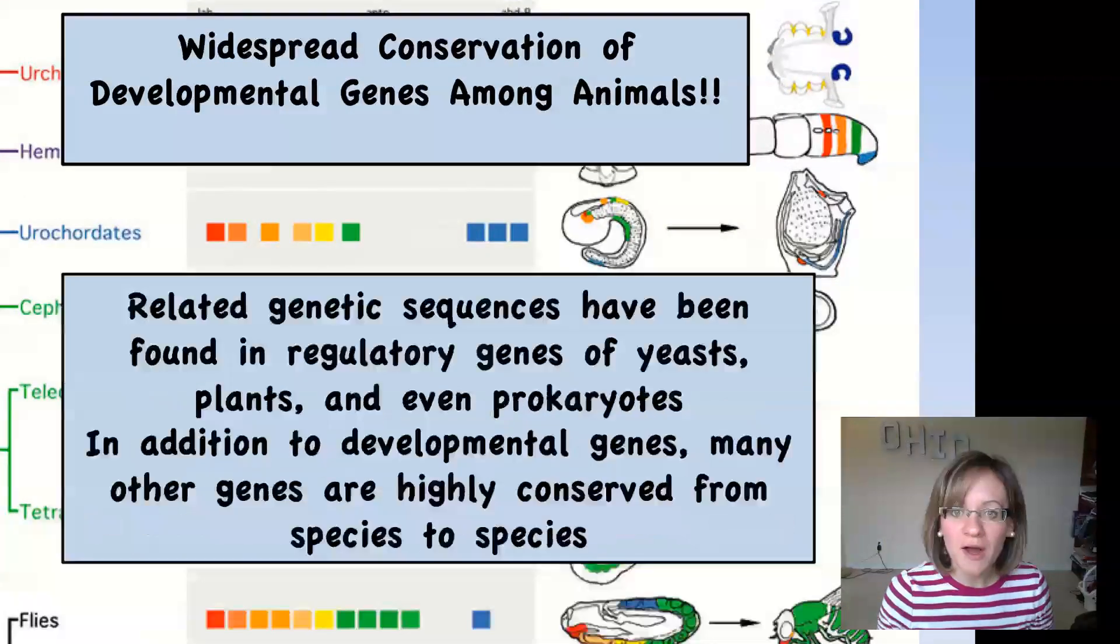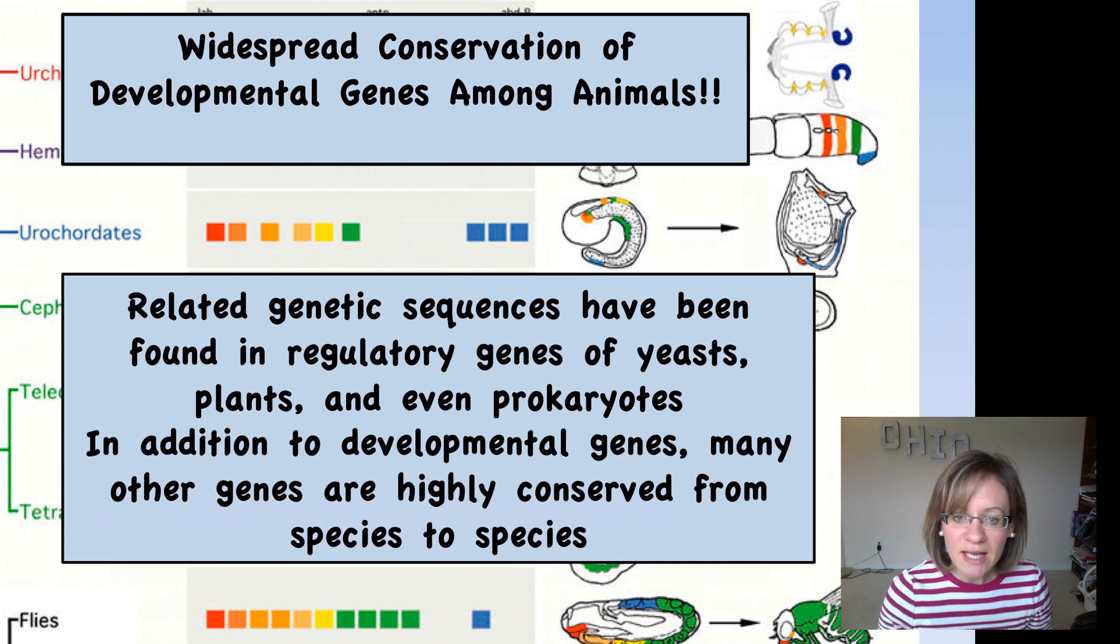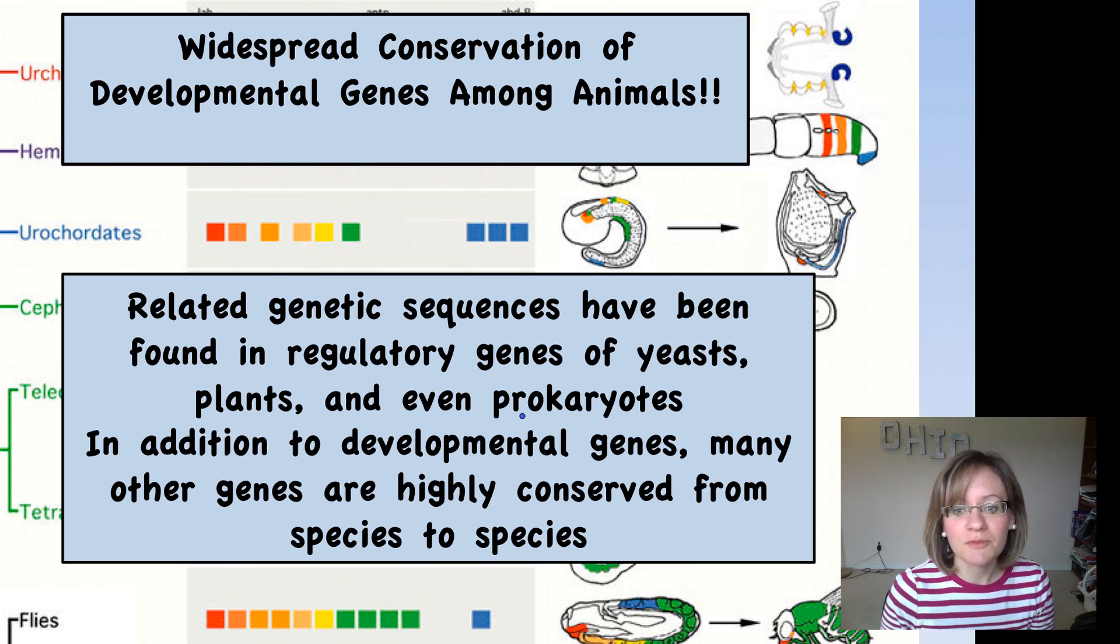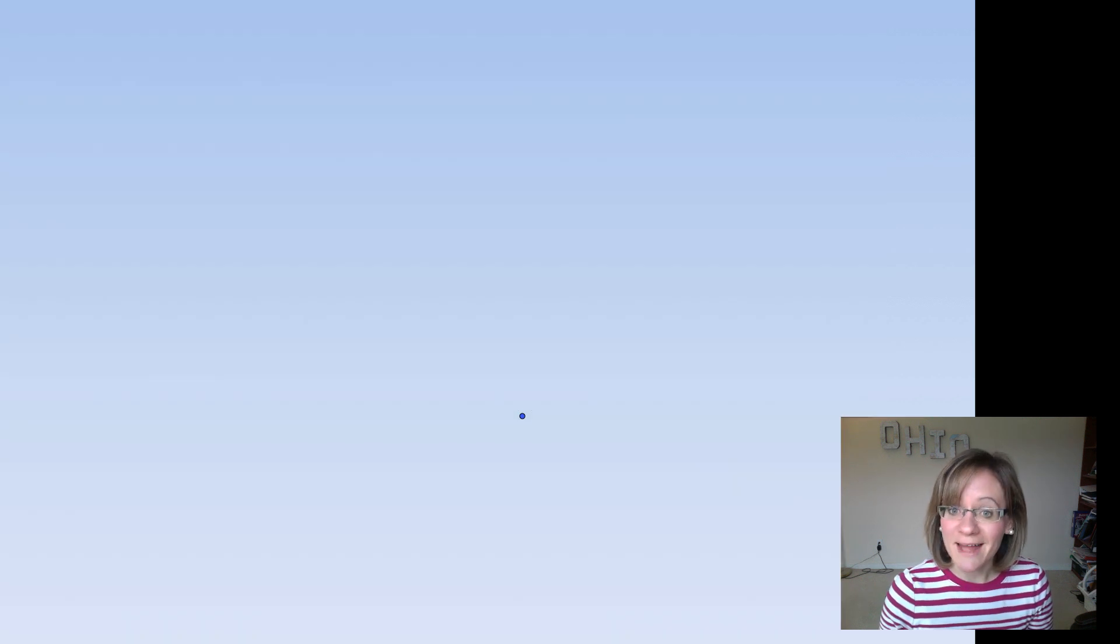So widespread conservation of these developmental genes. And these have been found in yeast, plants, prokaryotes. So in addition to these developmental genes, many other genes have also been found to be highly conserved from species to species. And that's going to do it for this video on eukaryotic gene expression.